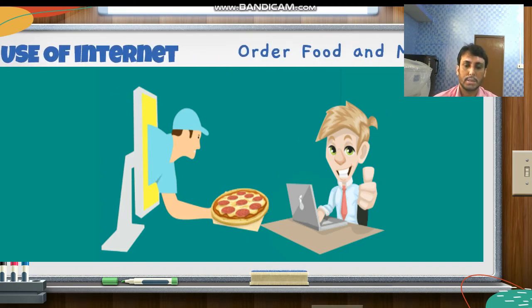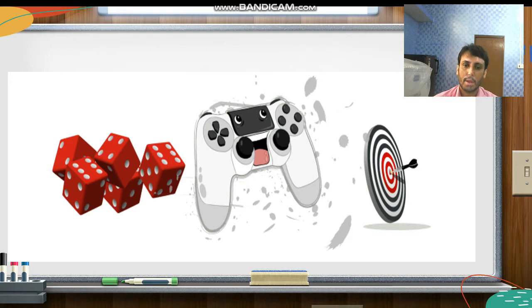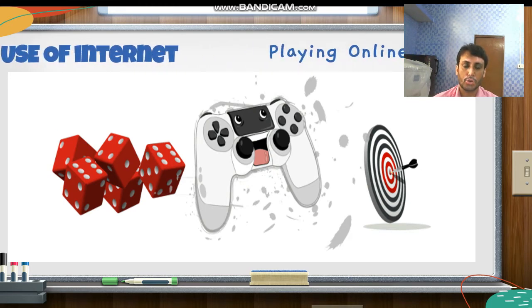Order food and medicine — nowadays food can be brought to your house using the internet. For example, pizza is very popular and you can buy it using the internet. Even if you want to buy medicine that is not available in a nearby shop, you can buy it through online mode using the internet.